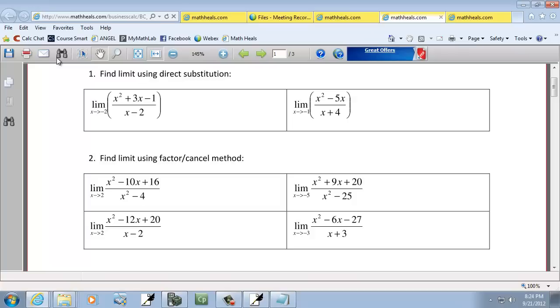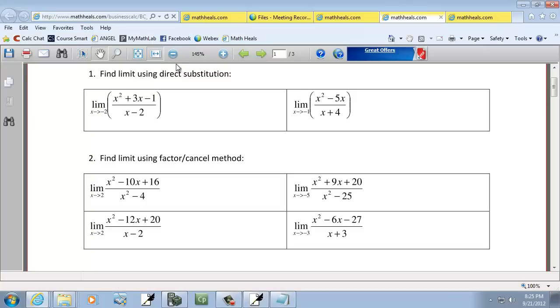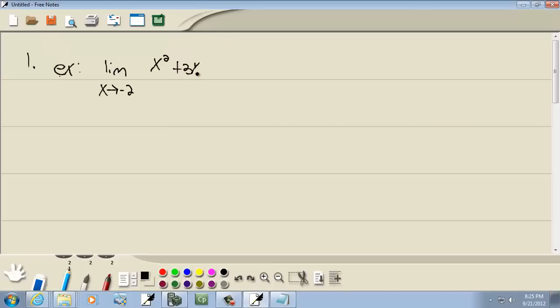So, my first example: I have a limit as x goes to negative 2 of x squared plus 3x minus 1 over x minus 2.